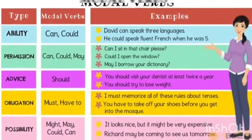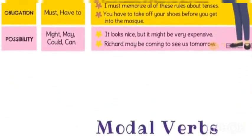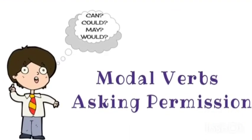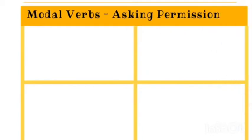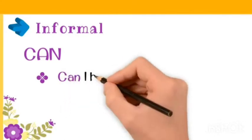These are the modal auxiliaries and their uses along with their examples. Now let us see modal verbs for asking permission. The table shows modal verbs for asking permission. In informal tone — when we are not talking to someone official or senior — we use can.